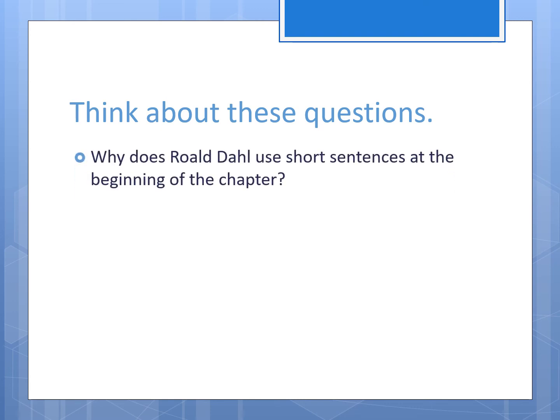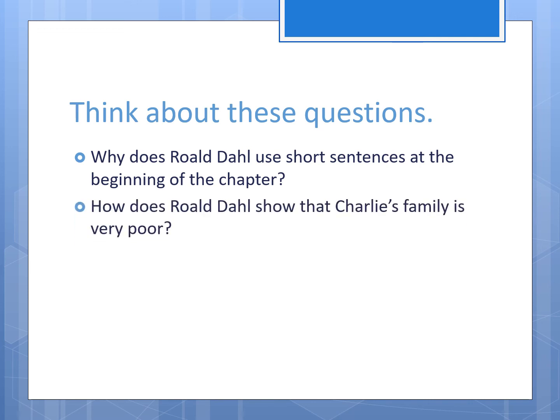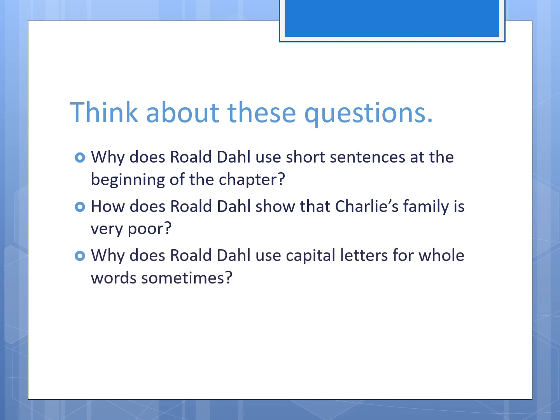First of all, why does Roald Dahl use short sentences at the beginning of the chapter? Is there any link to the illustrations there? What's he trying to do? How does Roald Dahl show that Charlie's family is very poor? How does he describe them? What kinds of things do they do? What kinds of things do they have to eat? And why does Roald Dahl use capital letters for whole words sometimes? You'll find those towards the end of the chapter. Why do you think that might be? What's he trying to do?